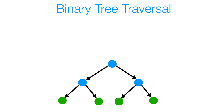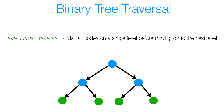We've looked at depth first search techniques like pre-order, in-order, and post-order traversal. Those are really good to use if the node you're looking for is deep down in the tree, because we go deep down and work our way back up. But what if the node you're looking for is closer to the root? Suppose our tree had 1000 levels and the node we're looking for exists between level 1 and level 5. Then it'd make more sense to explore closer to the root first, favoring the breadth of the tree over the depth — and that's exactly what level order traversal is.